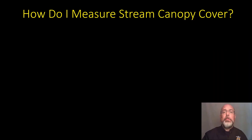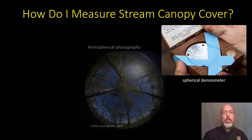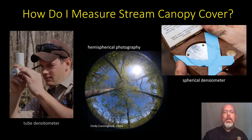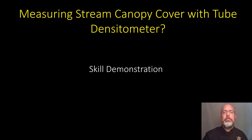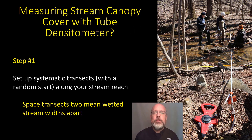What are some ways to measure stream canopy cover? There are several. You can use a spherical densiometer — we'll have a video on that to go along with this one. You can use hemispherical photography, pointing a camera straight up at the canopy. Or you can use a tube densiometer, and that's what we're going to talk about today. Here's the skill demonstration on measuring stream canopy cover with a tube densiometer. This is a several-step process.